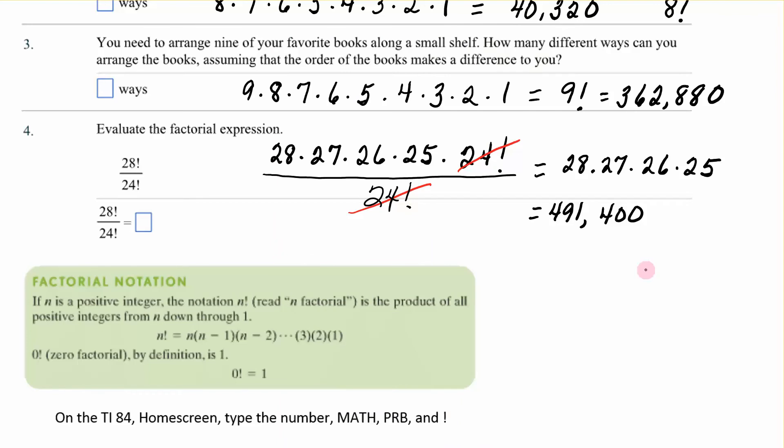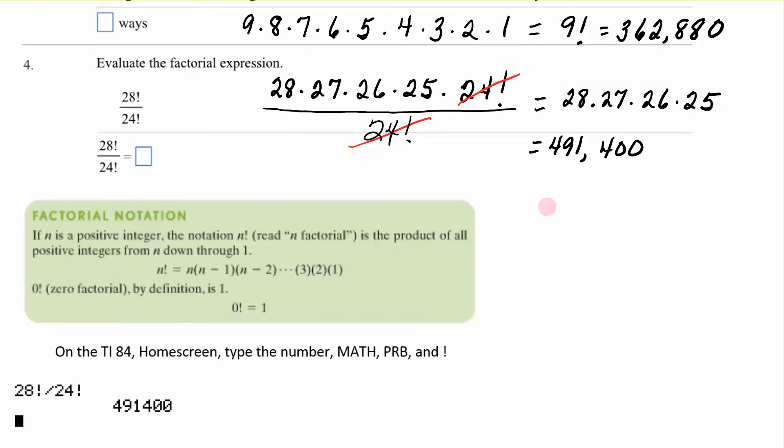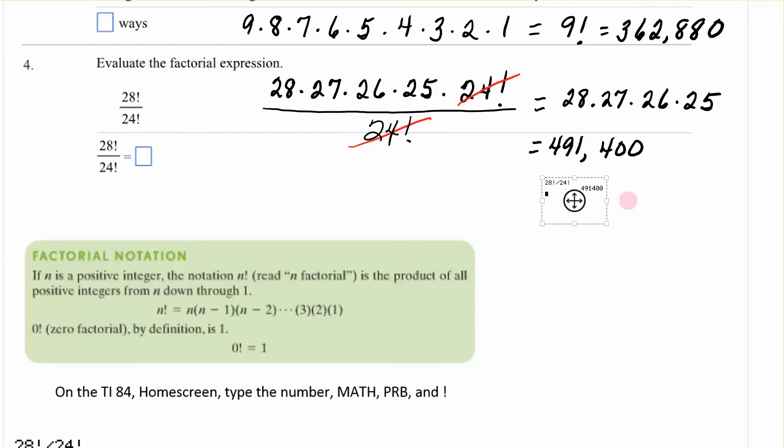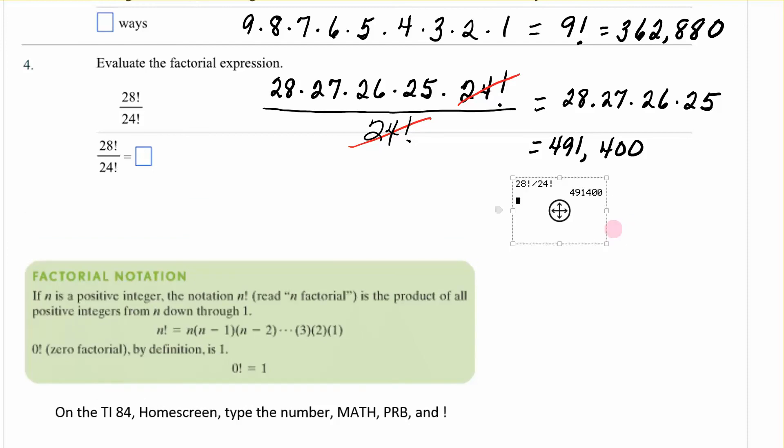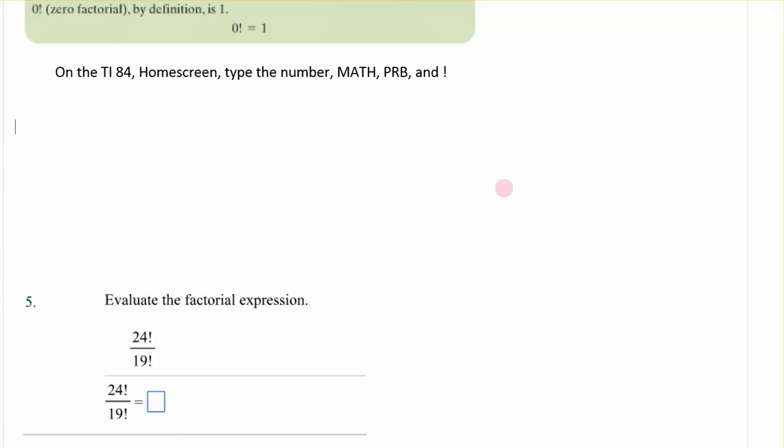Now, here is the definition. And it says n factorial is n times n minus 1 times n minus 2 all the way down to 3 times 2 times 1. There is a definition. 0 factorial is equal to 1. That's just a definition.